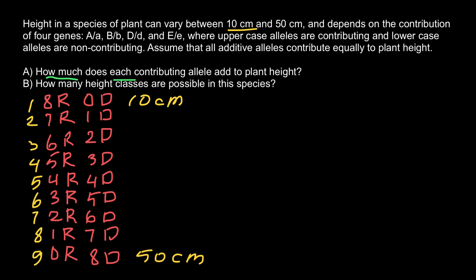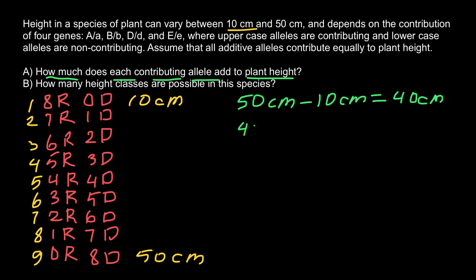Now let's find how much each contributing allele adds to plant height. 50 centimeters minus 10 centimeters gives a height difference of 40 centimeters between the smallest and tallest. We divide 40 centimeters by eight, since all the difference in height is due to the presence of dominant alleles, with a minimum of one and a maximum of eight. This gives us five centimeters per one dominant allele.